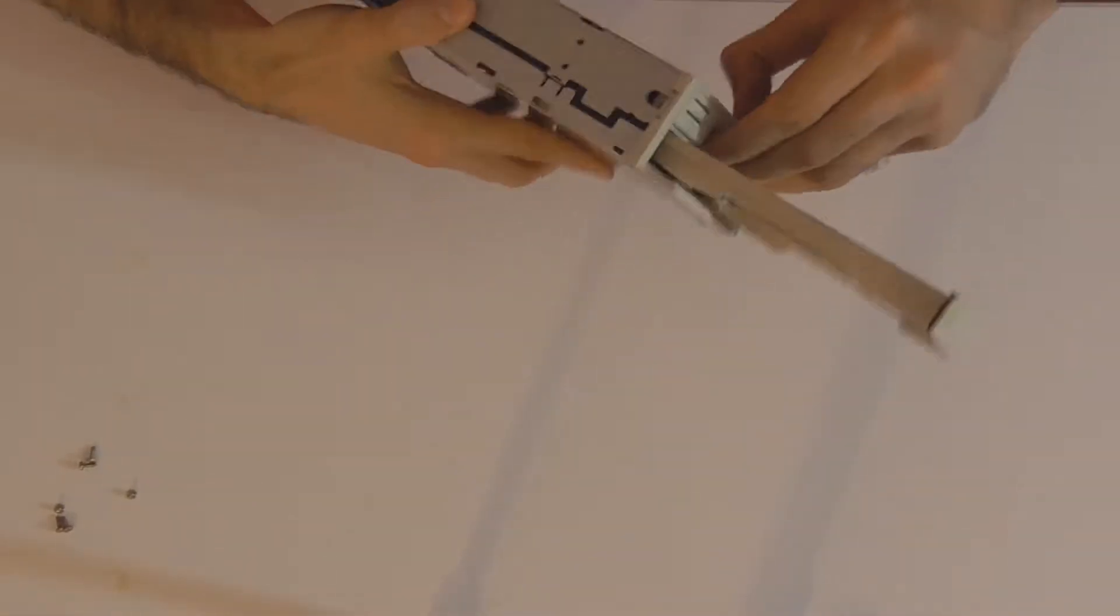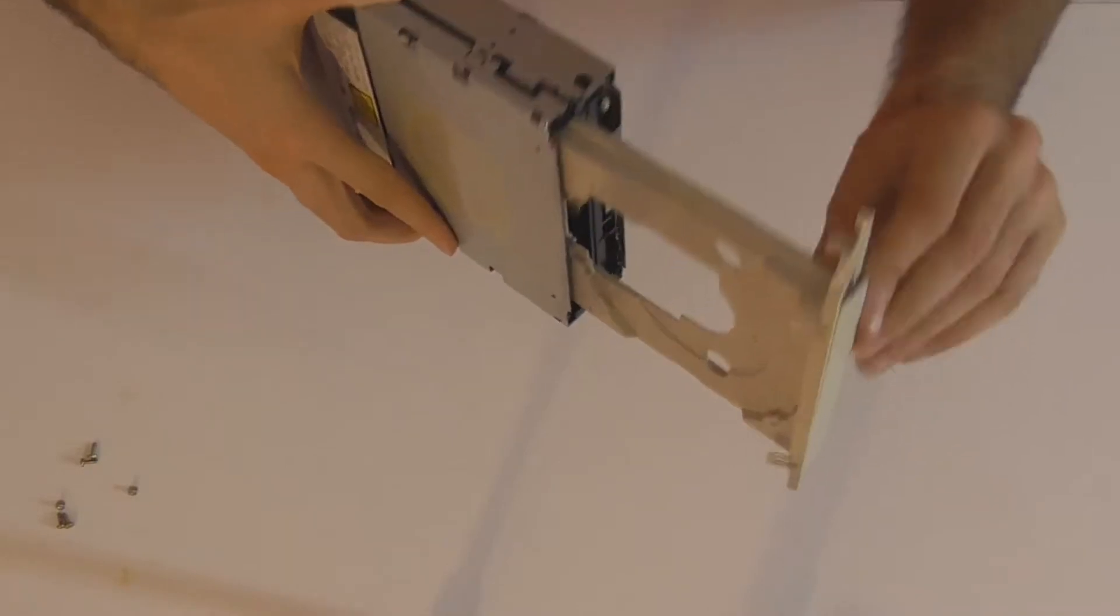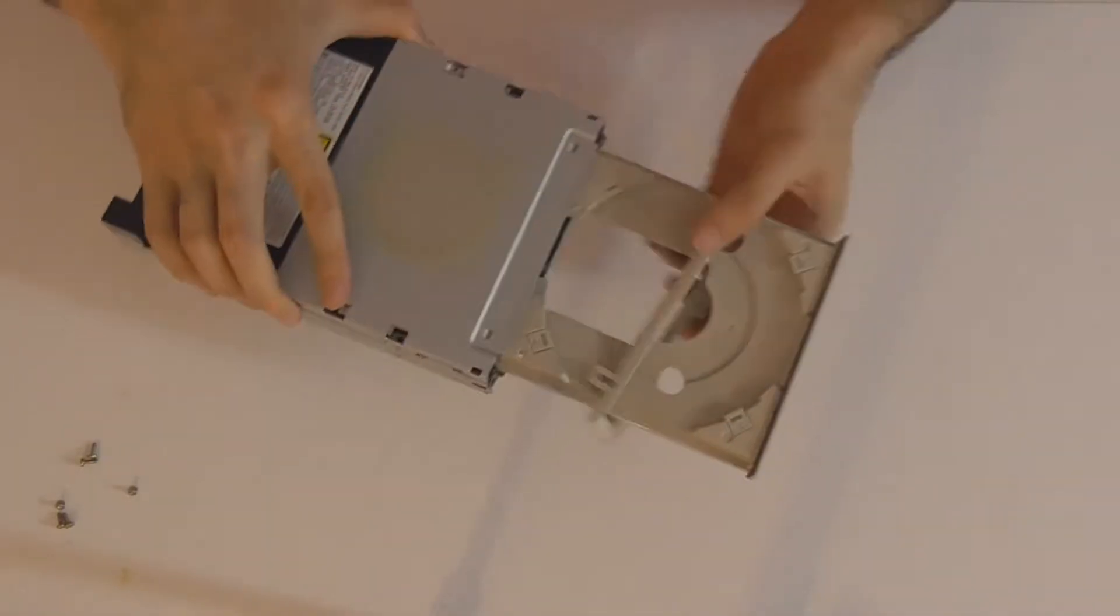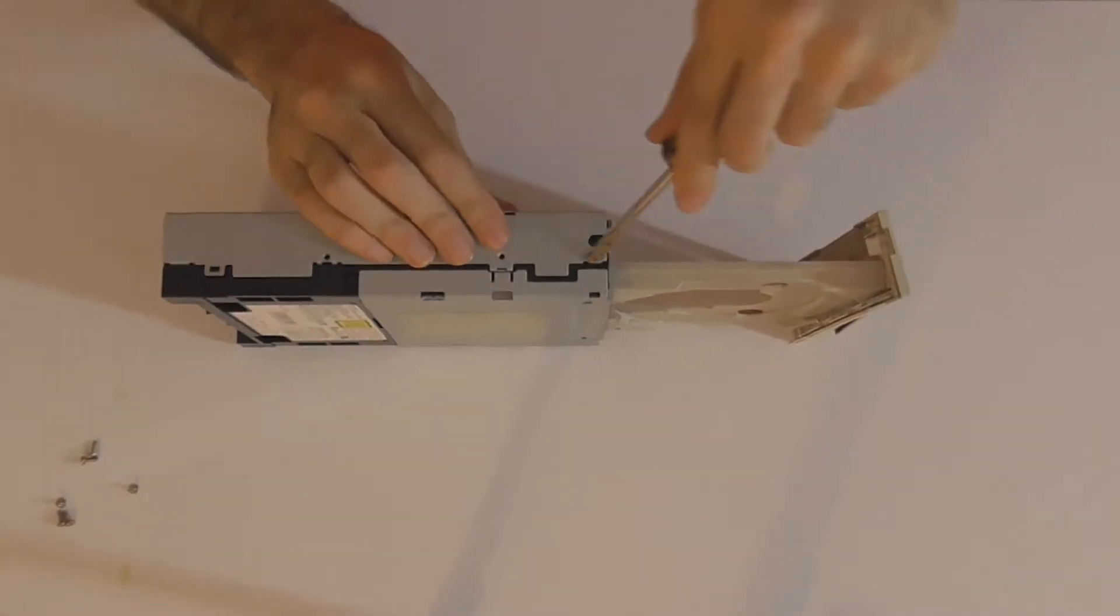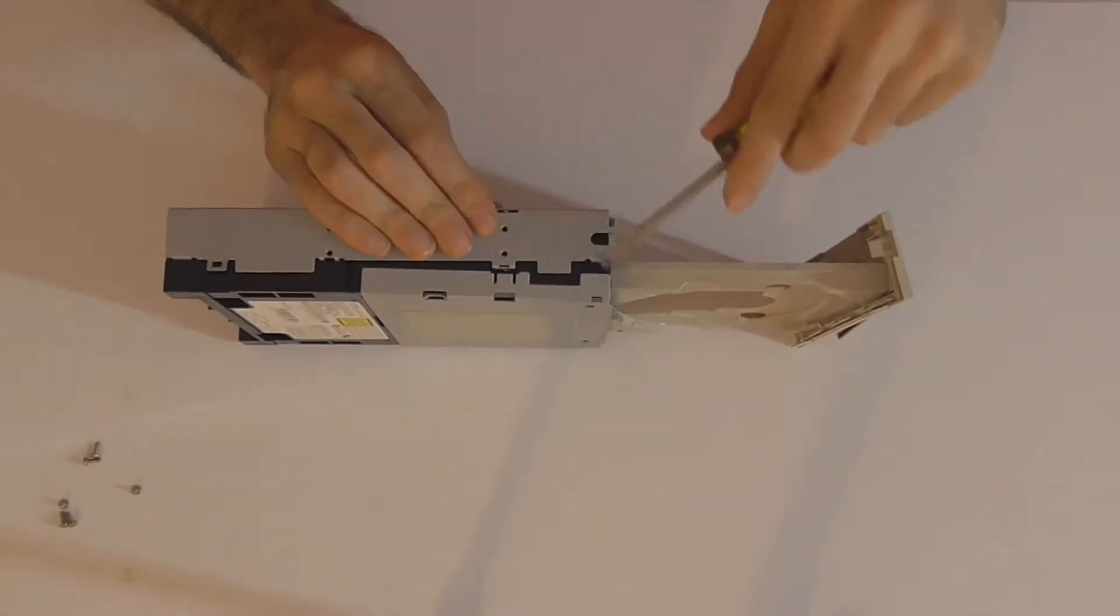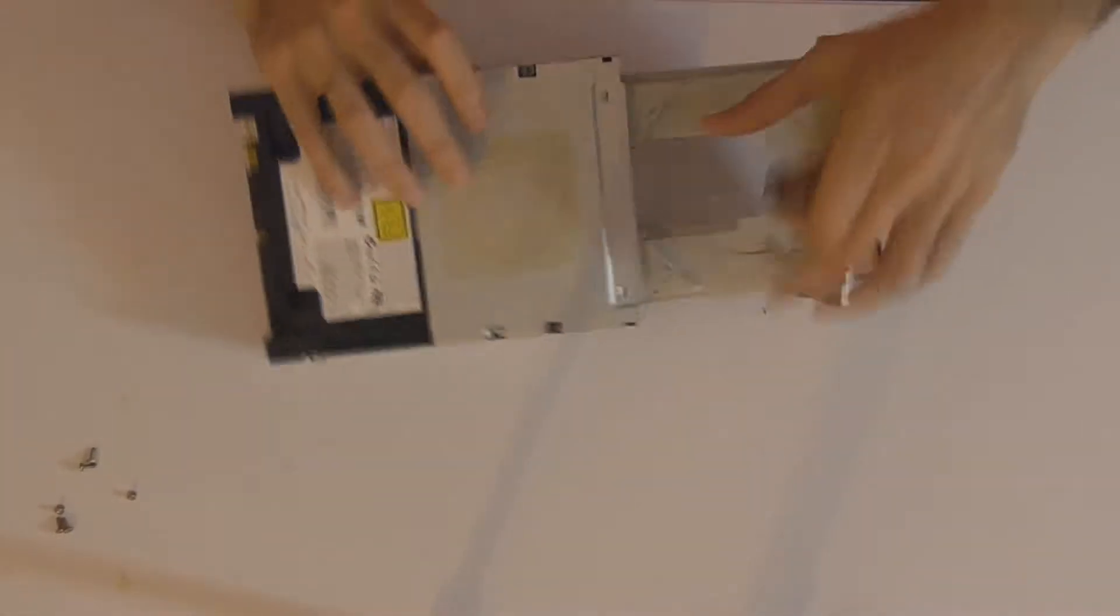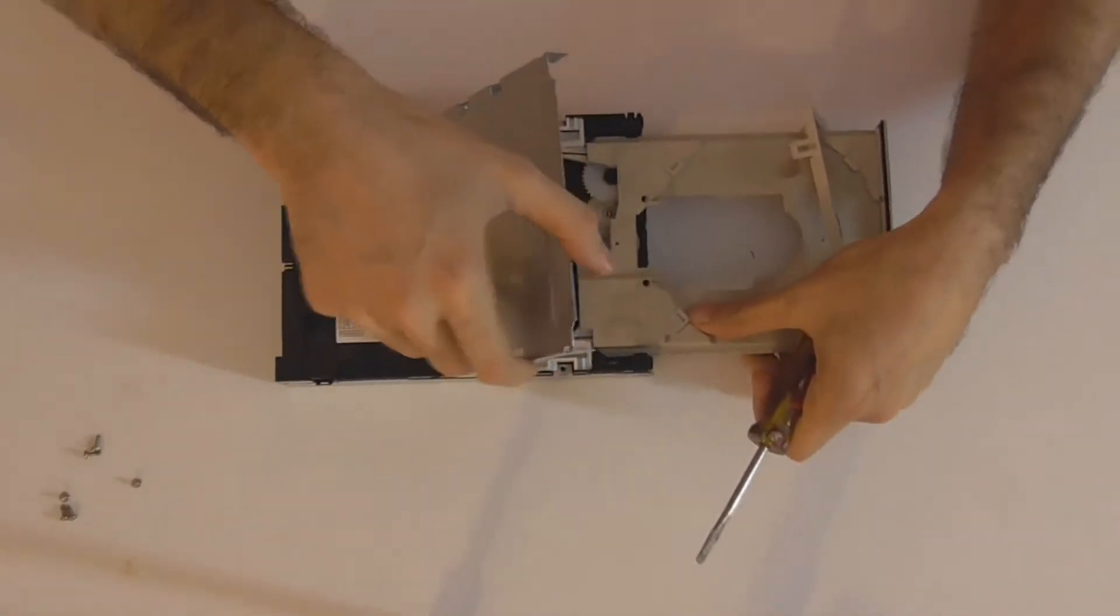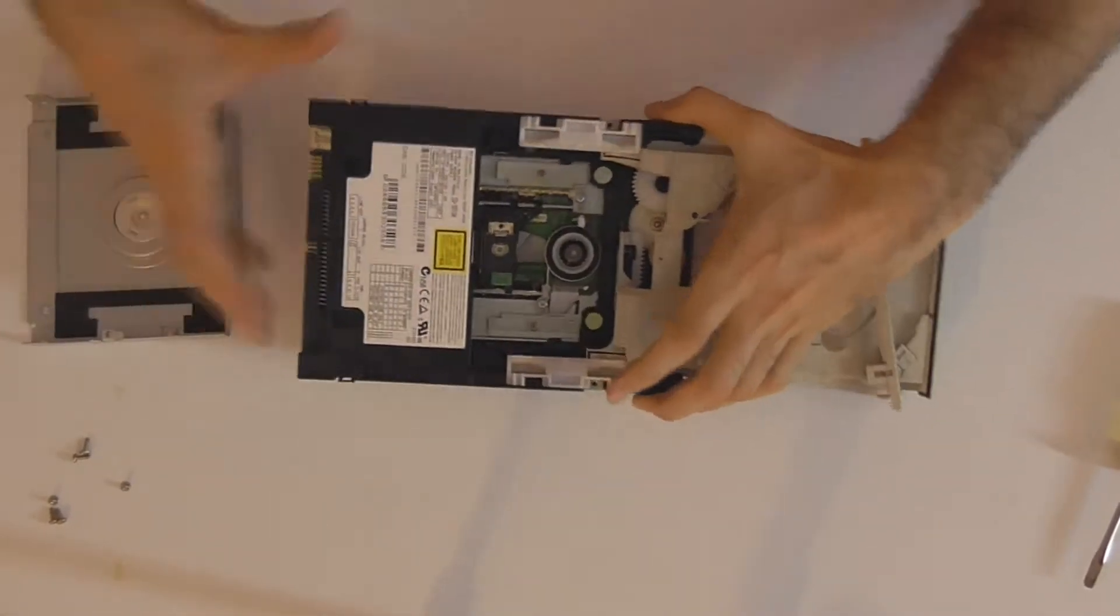Now taking the faceplate off, it may require some prying, so identify where the plastic clips are that hold it in place. Try prying something else and try not to stab yourself in the process. This is the top panel and as you can see I have pried it off.